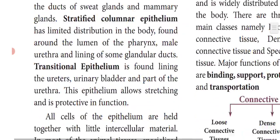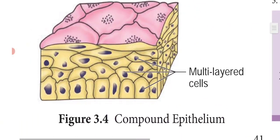Compound epithelium is made up of more than one layer. If it is made of one layer it is called simple epithelium; if more than one layer it is called compound epithelium — that is, multi-layered cells. Compound epithelium has a limited role in secretion and absorption.